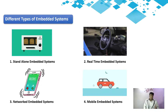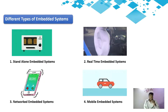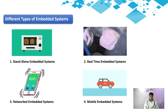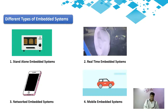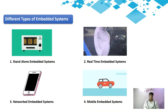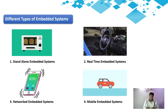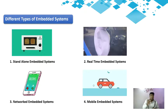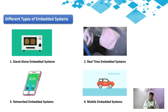Let's see the different types of embedded systems. The first is a standalone embedded system — a system which doesn't depend on a host computer and is independently functional. For example, consider a microwave oven. A microwave oven can independently work without any help from a host system.